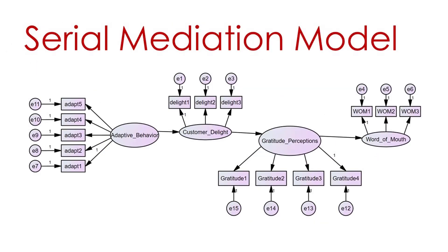The other type of mediation is called serial mediation, sometimes referred to as chain mediation. Here you have multiple mediators in a chain: adaptive behavior leads to customer delight, then that mediator leads to another possible mediator — gratitude perceptions — and then to word-of-mouth.